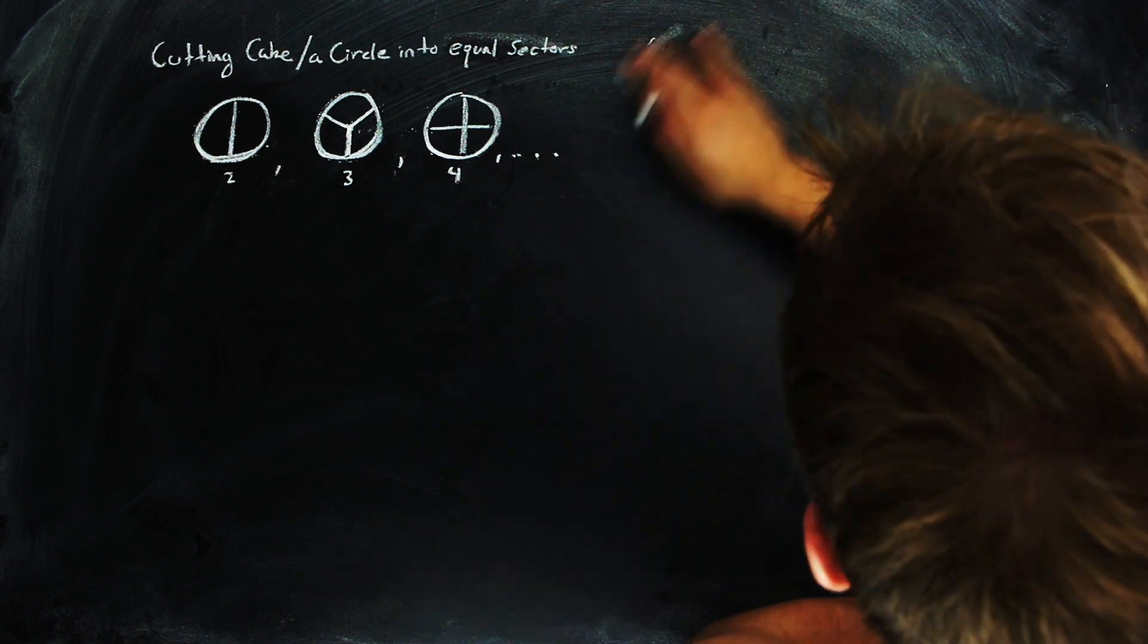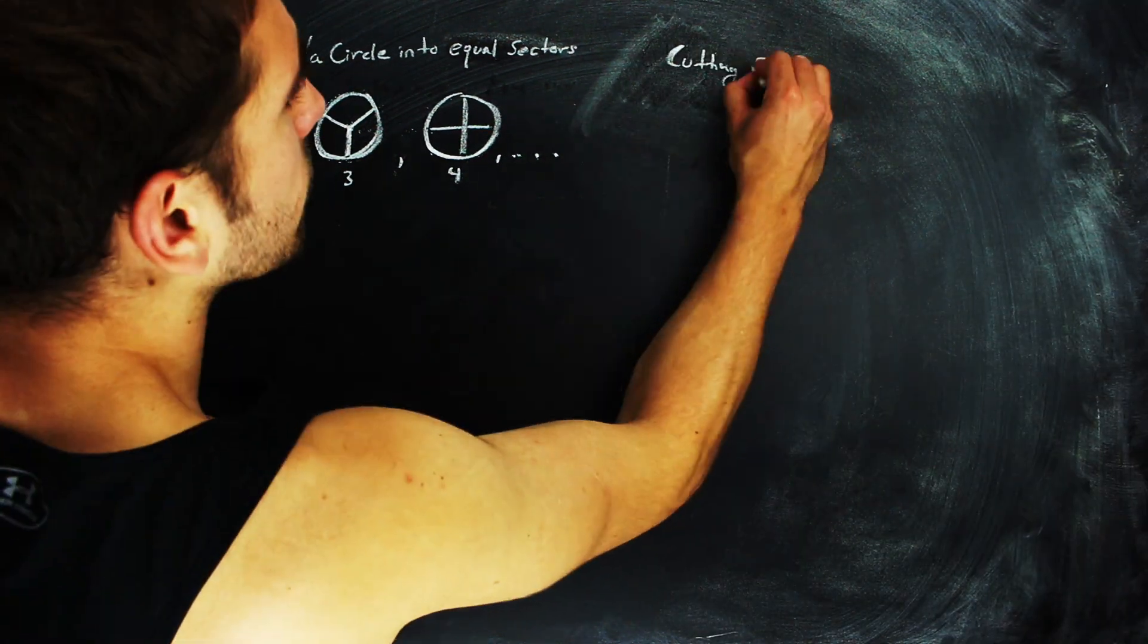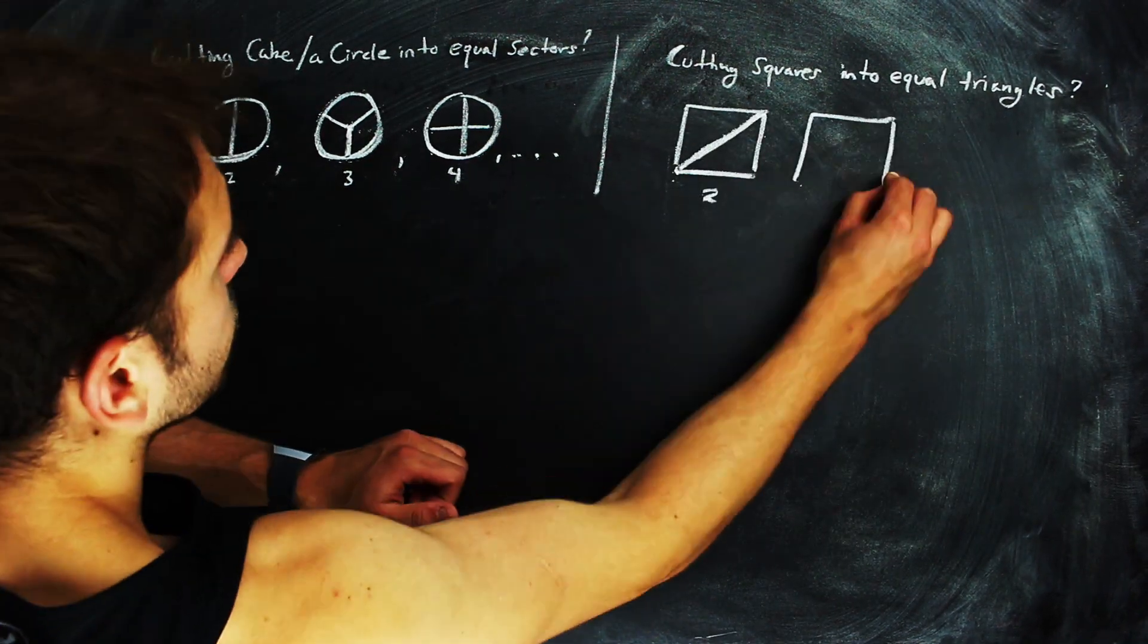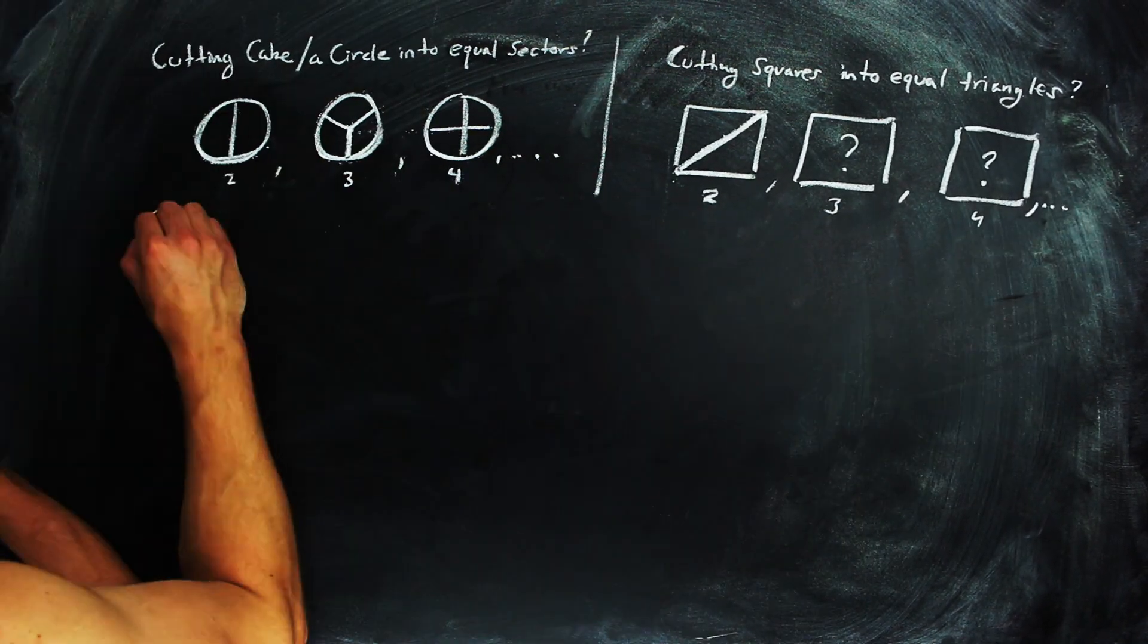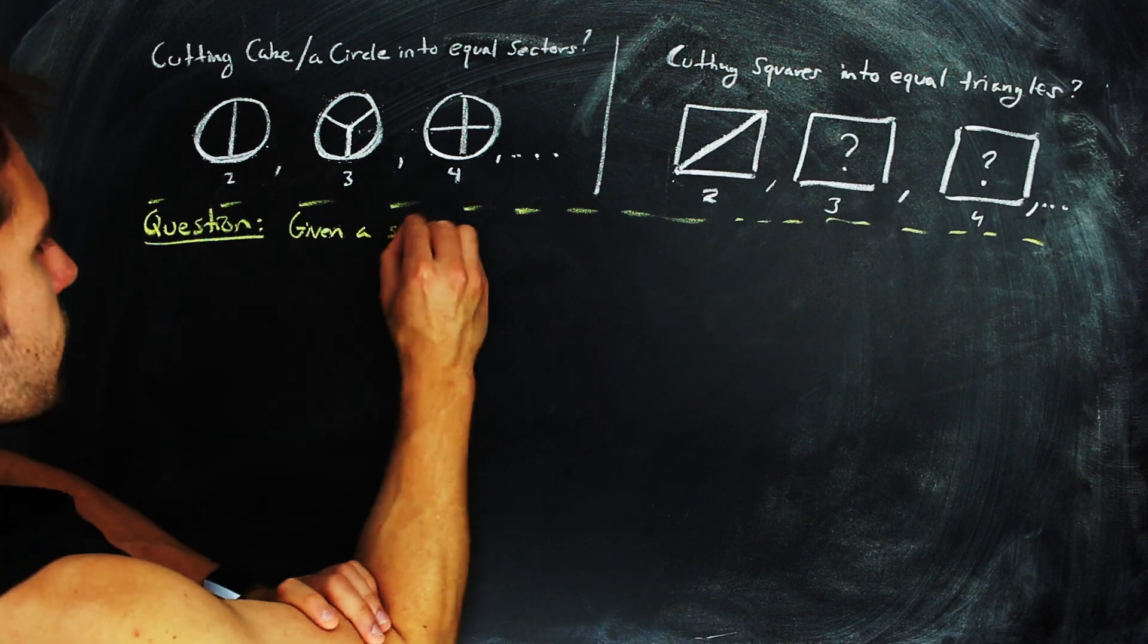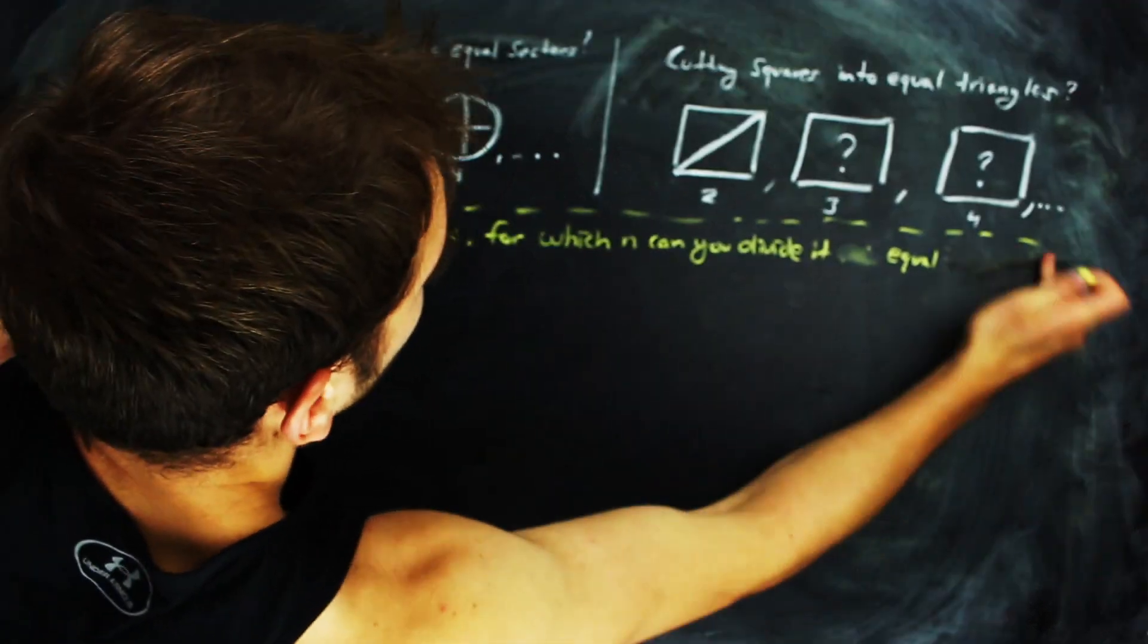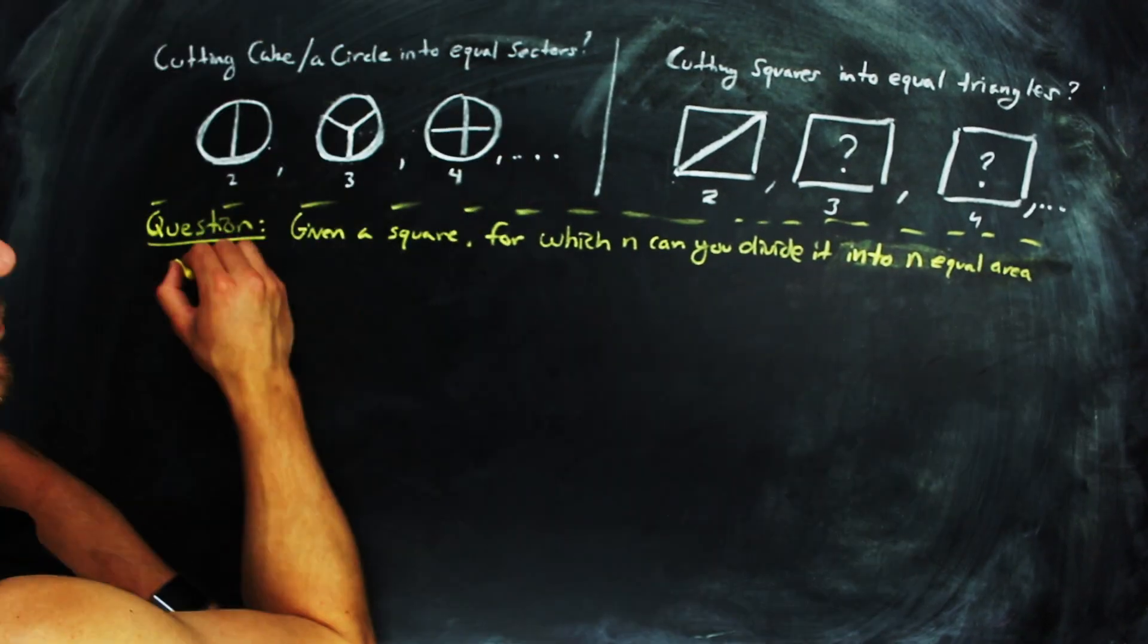But what if the cake is square? The analog to a sector in this case is just a triangle, so can you still serve the entire cake evenly to n people in triangular pieces? To be a bit more mathematically direct about the problem, given a square, for which n can you divide the square into n equal area triangles?